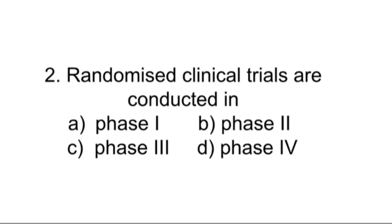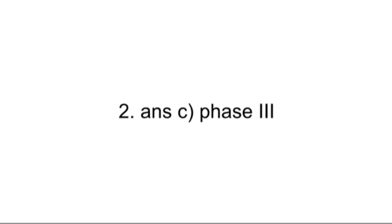Randomized clinical trials are conducted in which phase? Phase 1, Phase 2, Phase 3, Phase 4. To answer this question, you have to know about the phases of clinical trials. The answer is option C, Phase 3. Randomized clinical trials are conducted in Phase 3.